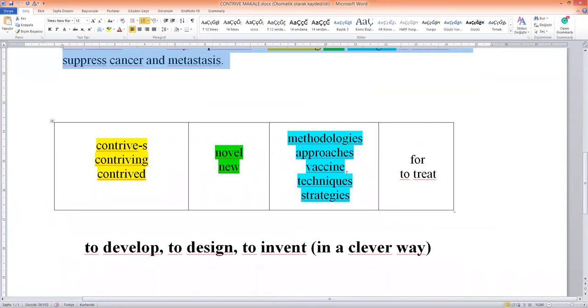Because the verb 'contrived' includes something new, something unusual, these adjectives 'novel' and 'new' are comfortably used with it.